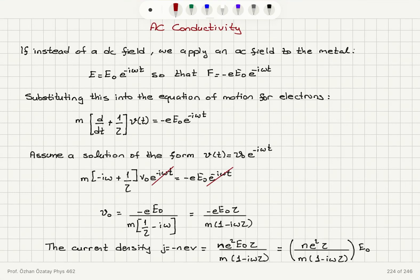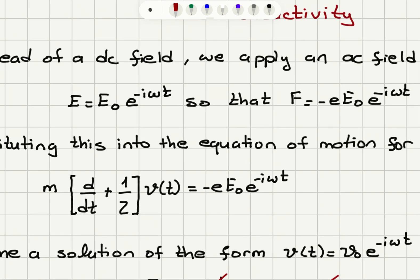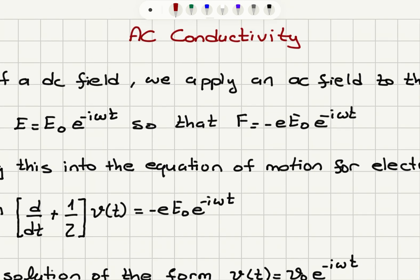Now that we talked about Drude's theory and Ohm's law, we can look at AC conductivity in addition to DC conductivity. In order to talk about AC conductivity, we need to apply an AC field to the metal. The electric field that we apply is of the form E0 e to the minus i omega t, so it's an oscillatory electric field. The electrical force on the electron will be minus e, the charge of the electron, times E0 e to the minus i omega t.